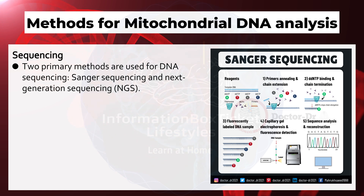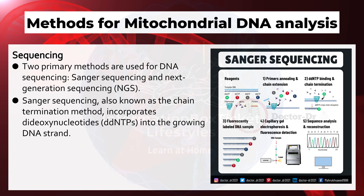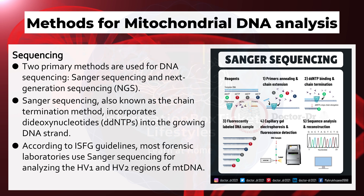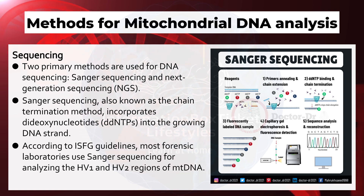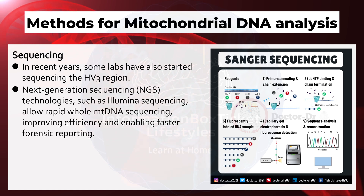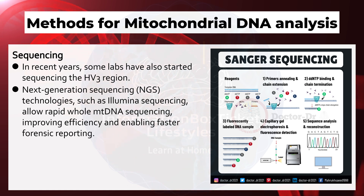Two primary methods are used for DNA sequencing: Sanger sequencing and next-generation sequencing. Sanger sequencing, also known as the chain termination method, incorporates dideoxynucleotides into the growing DNA strand. According to ISFG guidelines, most forensic laboratories use Sanger sequencing for analyzing hypervariable regions 1 and 2. In recent years, some labs have also begun sequencing hypervariable region 3. Next-generation sequencing technologies, such as Illumina sequencing, allow rapid whole mitochondrial DNA sequencing, improving efficiency and enabling faster forensic reporting.